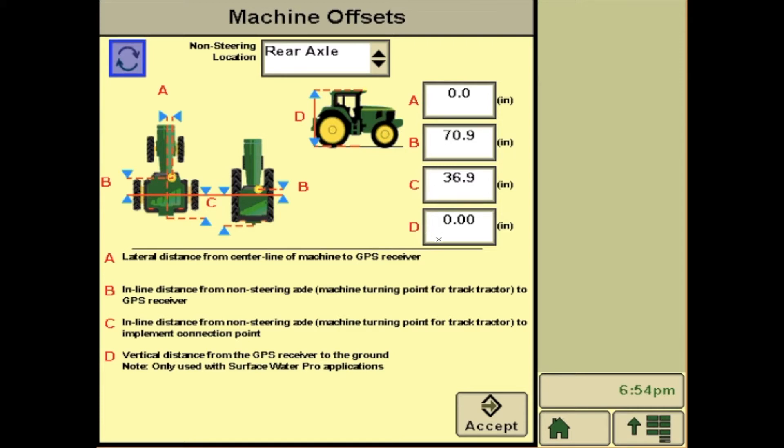You will need to have these all filled out to optimize your auto track and section control. Once you have them filled out, hit Accept.